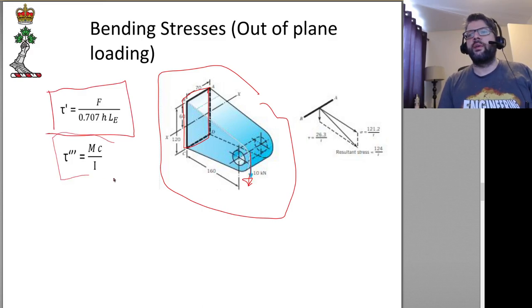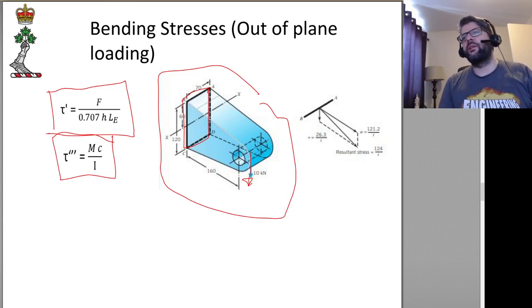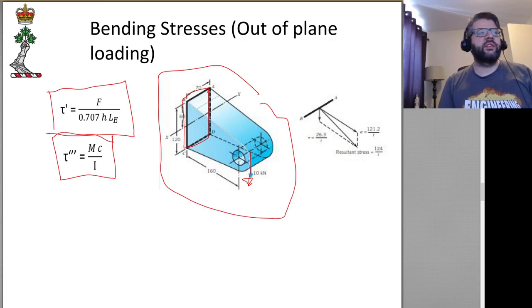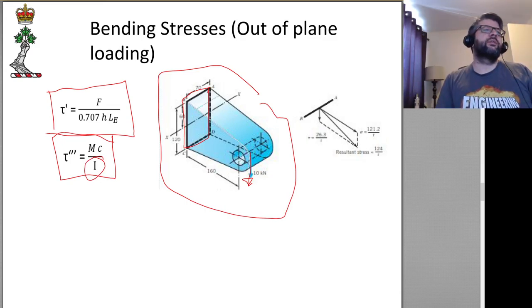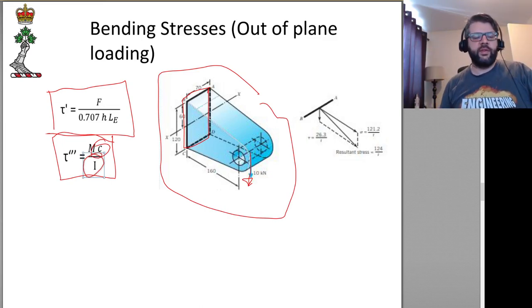We're going to have the direct load, and then we're going to have tau triple-prime — that'll be M times C over I. So C is just going to be the distance from the neutral axis. I is going to be based upon the cross section of the weld.